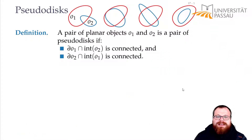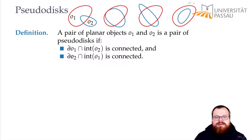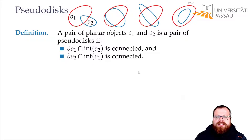Let's define what a pseudodisk is. If we have two objects O1 and O2 in the plane, then they are a pair of pseudodisks if the boundary of the first object intersected with the interior of the second object is connected, and the boundary of the second intersected with the interior of the first is also connected.